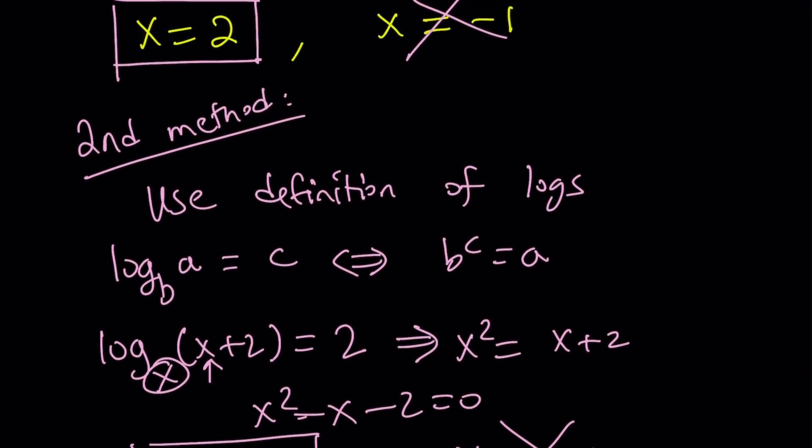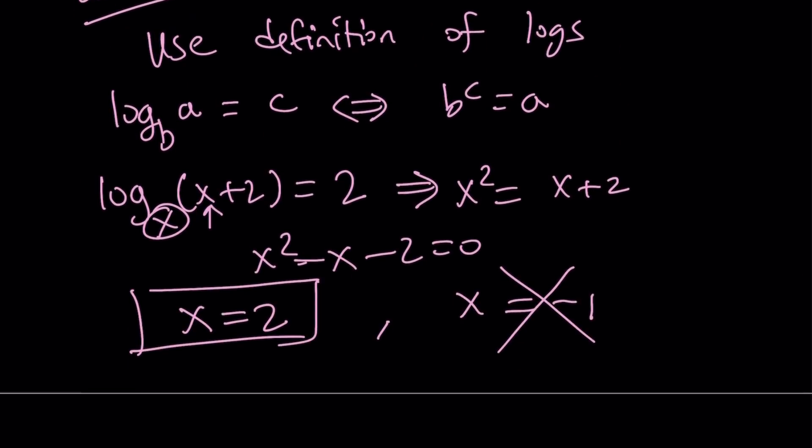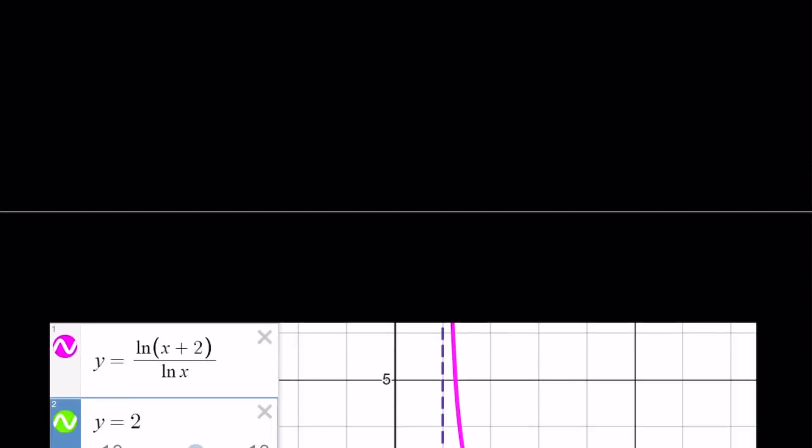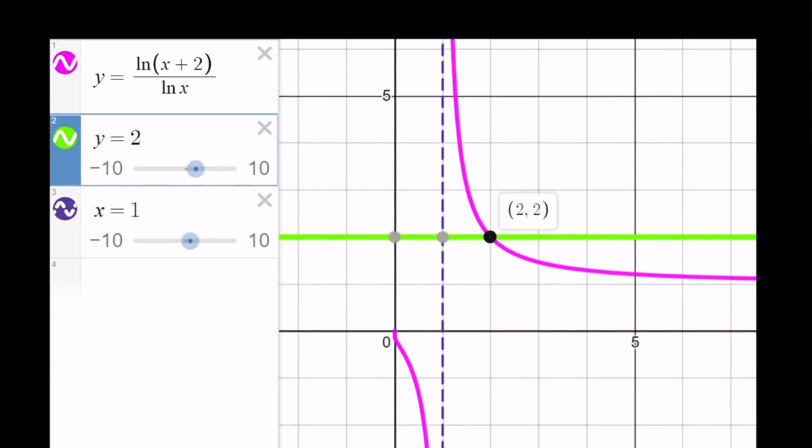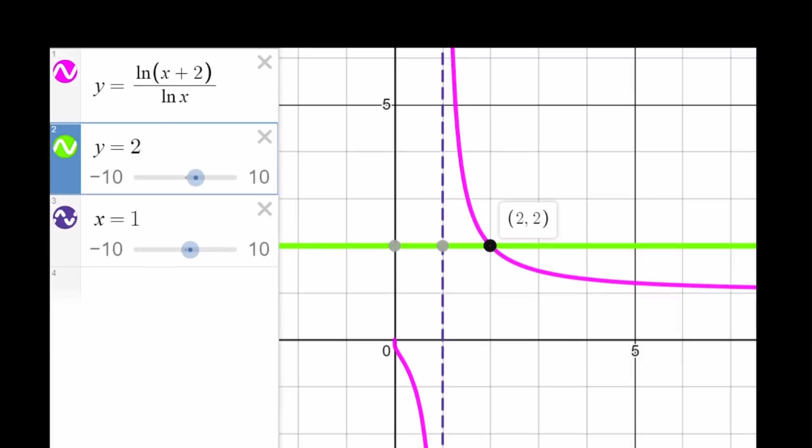Now, let's go ahead and take a look at the graph real quick and see how this function behaves. Here's our function, and I converted it. If you didn't, you could still graph it with Desmos. But I just wanted to show you the version that I used. And notice that our function, the purple one or magenta, whatever that's called, it's a decreasing function. And what do you notice? It's intersecting the horizontal line, which is y equals 2, at x equals 2. So, 2 comma 2 is an intersection point.